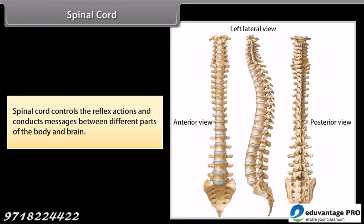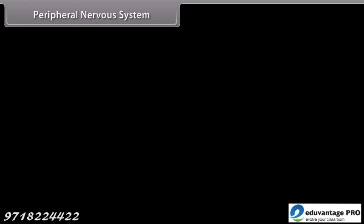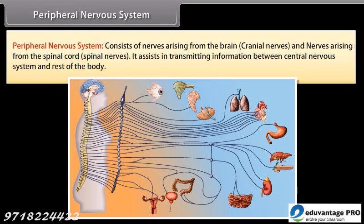The spinal cord controls reflex actions and conducts messages between different parts of the body and the brain. The peripheral nervous system consists of nerves arising from the brain (cranial nerves) and nerves arising from the spinal cord (spinal nerves). It assists in transmitting information between the central nervous system and the rest of the body.